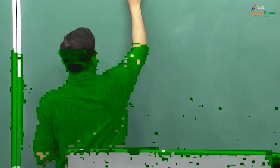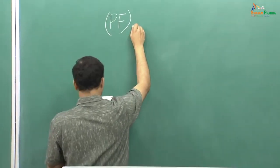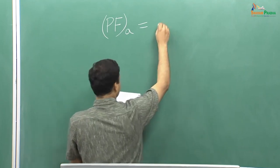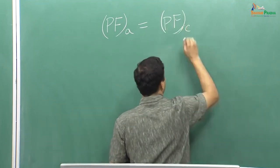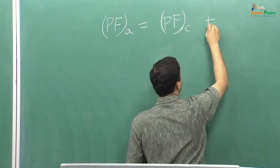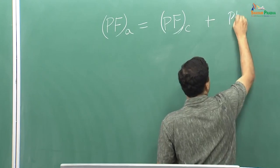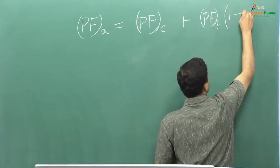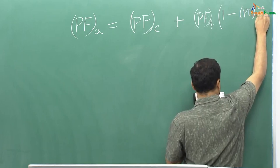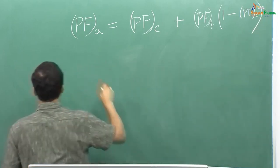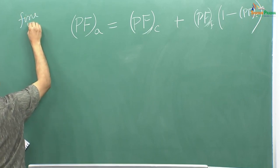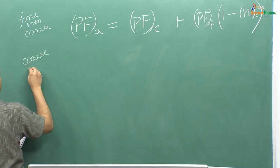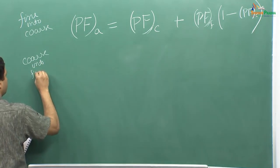For the first case where we had fine particles going into the coarse, we had PF apparent, or effective packing fraction, given by this relation. Where PFC is the packing fraction in which the coarse particles are getting packed, and PFF represents the packing fraction in which the finer particles are getting packed. This is for the case of fine into coarse particles.